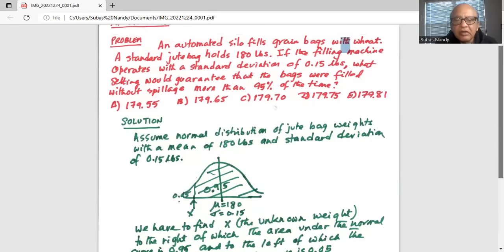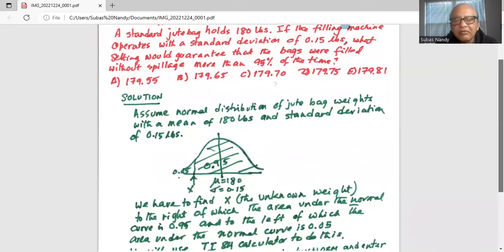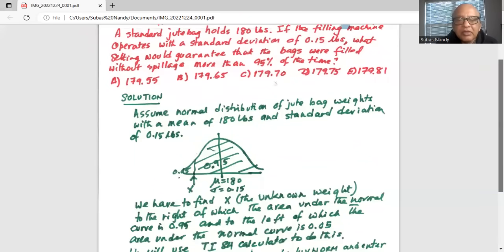We have to find x, the unknown weight to the right of which the area under the normal curve is 0.95 and the area to the left of which is 0.05.